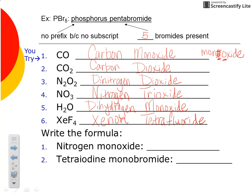Writing formulas for molecular compounds is just as easy — the formulas exactly match the name. Unlike ionic compounds, we don't crisscross anything because there are no charges. For nitrogen monoxide: no prefix on nitrogen means one nitrogen; mono means one oxygen. So NO. For tetraiodine monobromide: tetra means four iodines, so I with subscript 4; mono means one bromide. So the formula is I4Br.